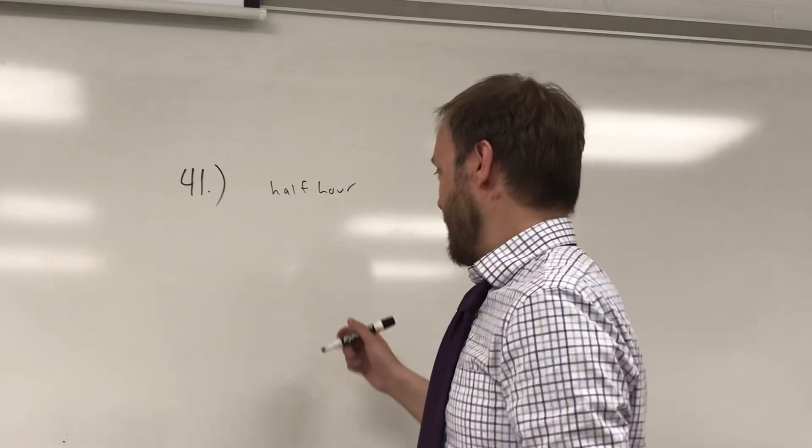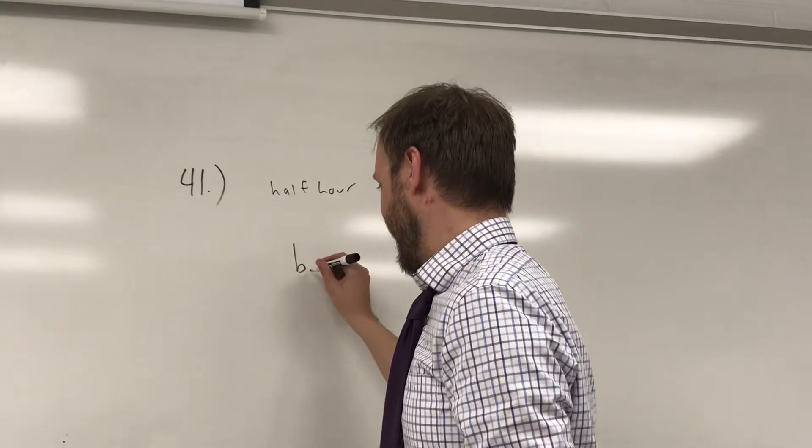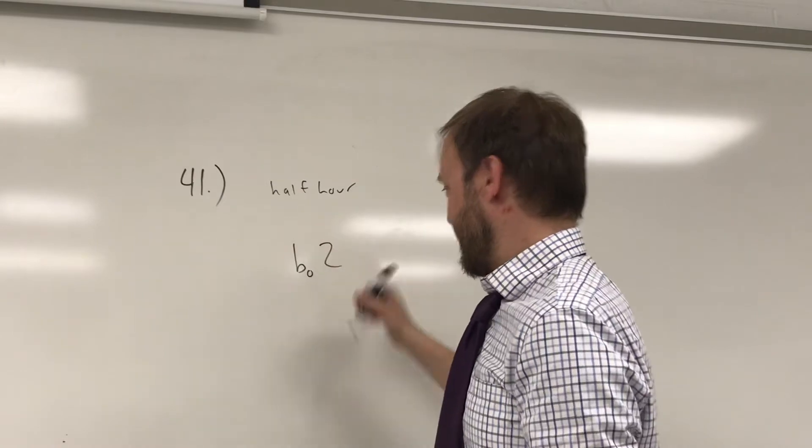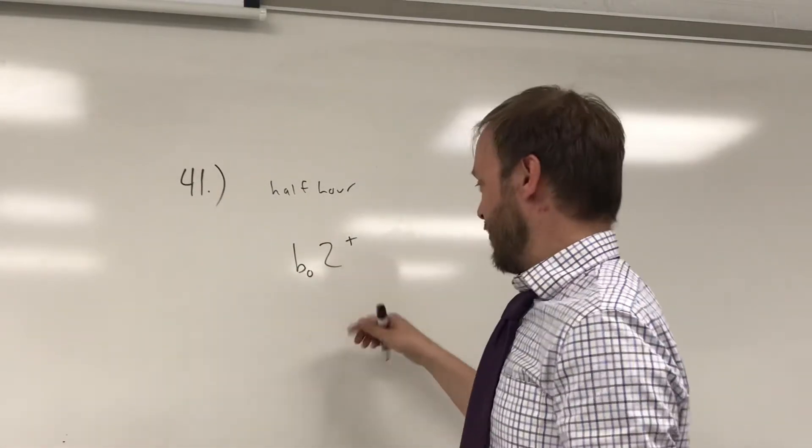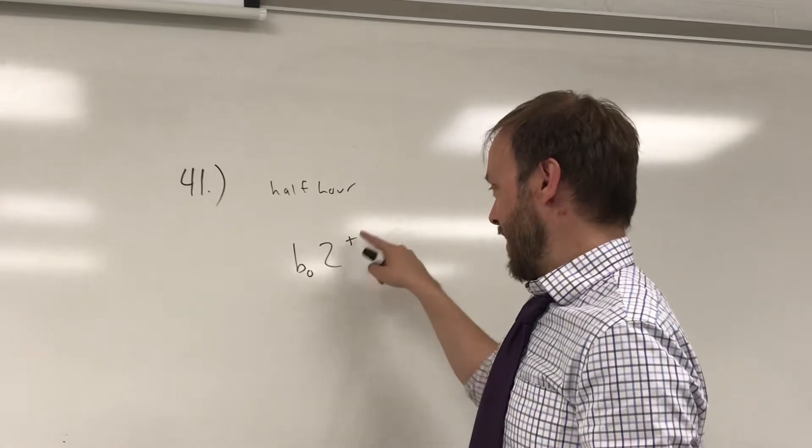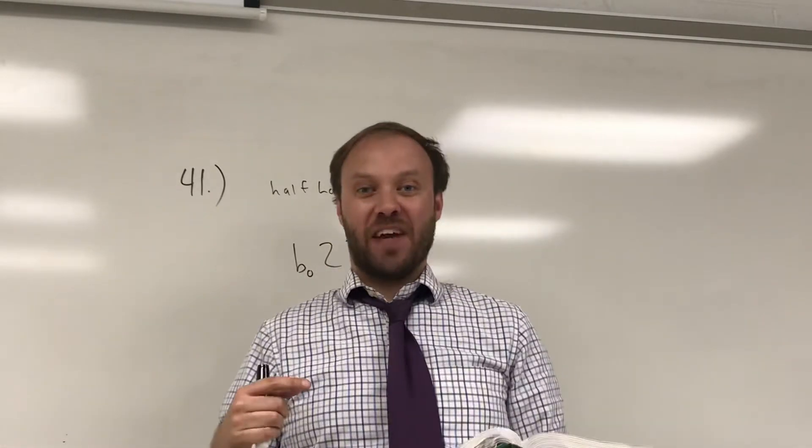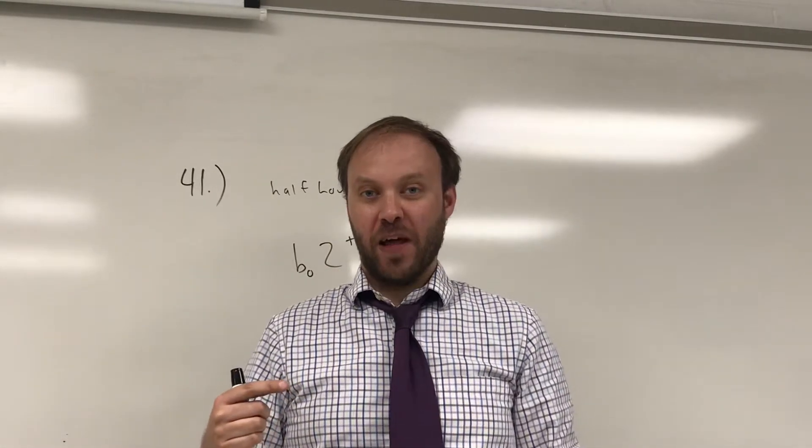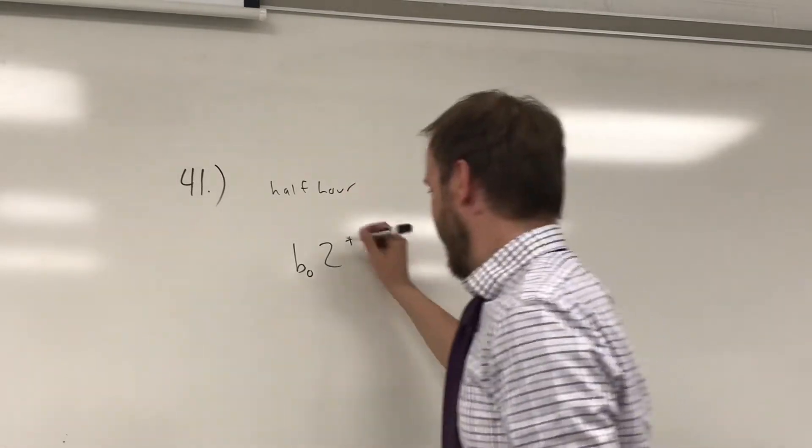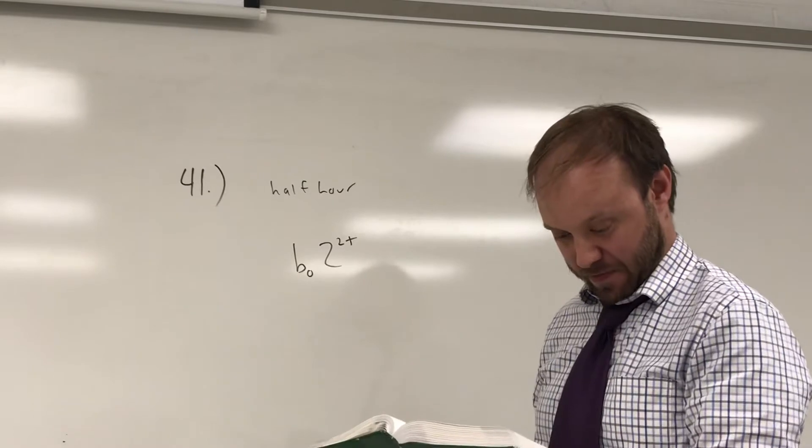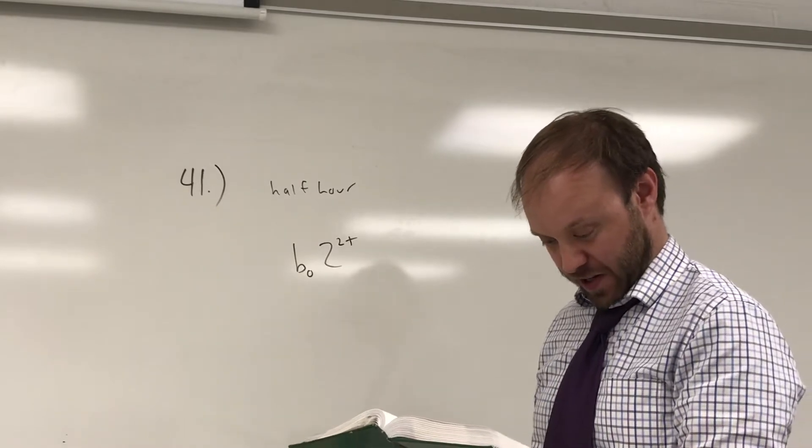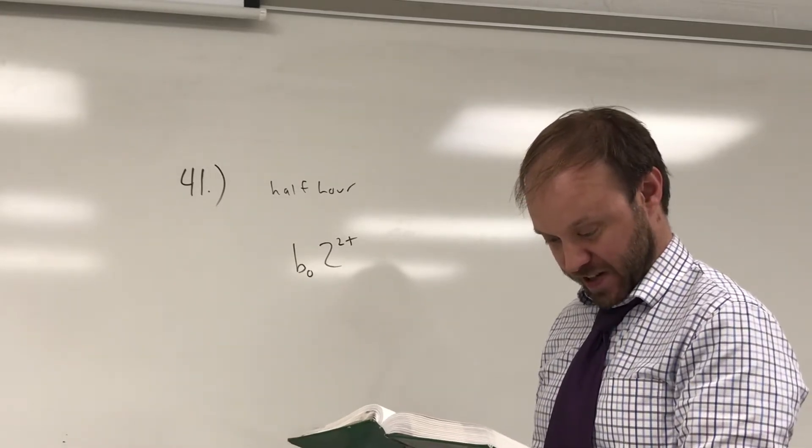Okay, so basically you've got some number of bacteria and the number of bacteria is just continuously being multiplied by two. So if it was every hour it would be the number of bacteria being multiplied by two to the t. However, it's every half hour, so you're multiplying by two twice per hour, so it's two to the two t power.